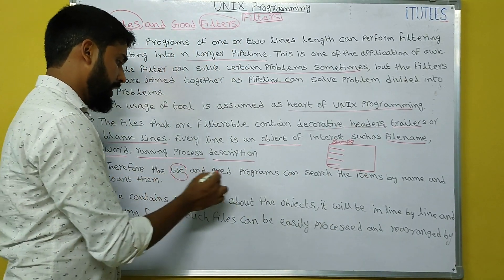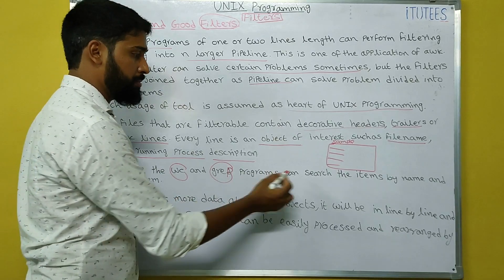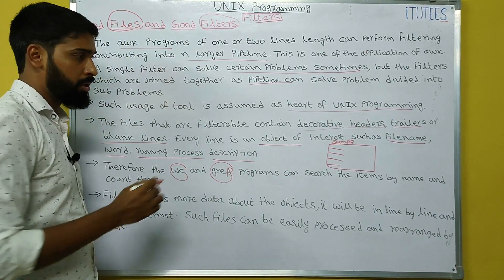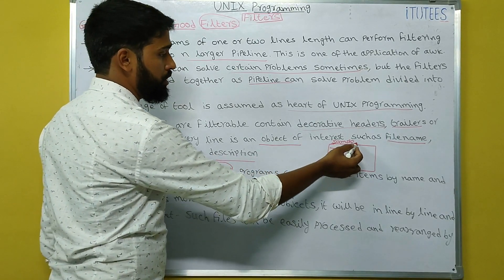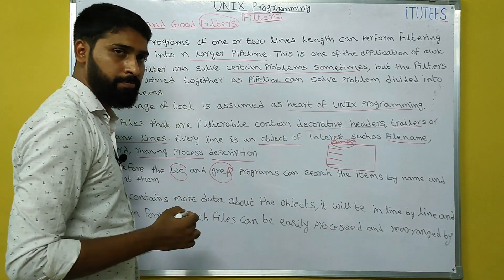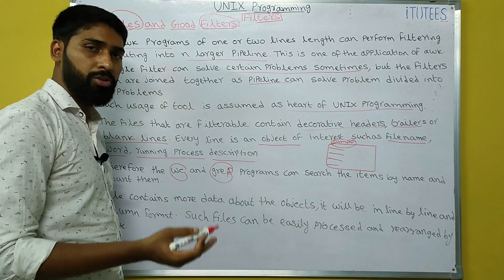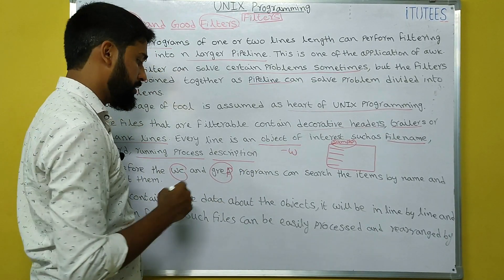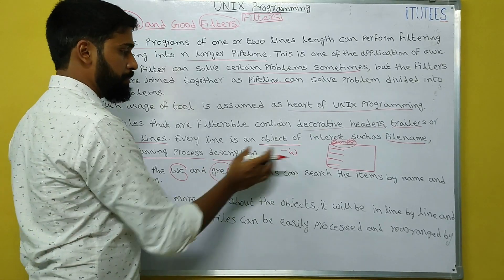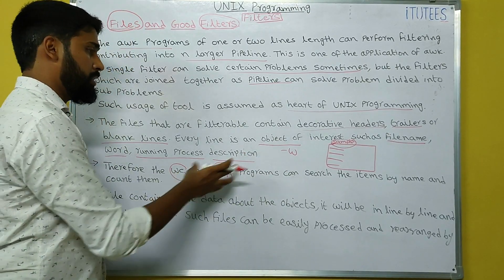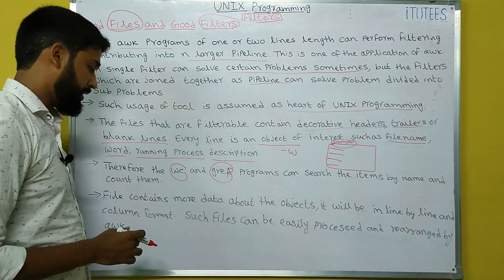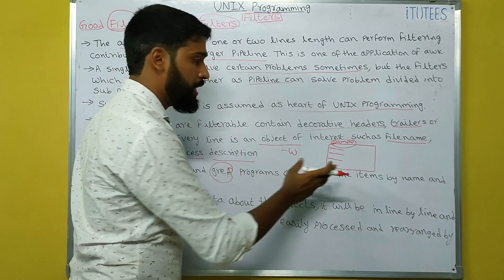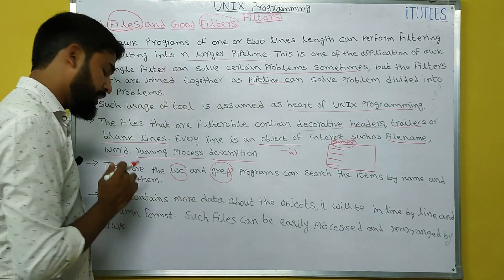Therefore, the WC and GREP programs can search the items by name and count them. Items by name means here you are going to provide the file name. Based on the input you are providing, -w means it displays the number of words. And with GREP, you have different options and patterns you can specify, so based on that it displays the content.